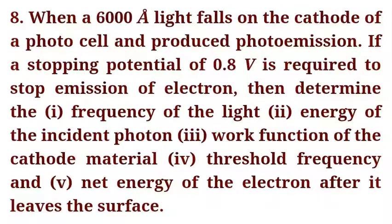When 6000 Angstrom light falls on the cathode of a photocell and produces photoemission, a stopping potential of 0.8V is required to stop the emission of electrons.